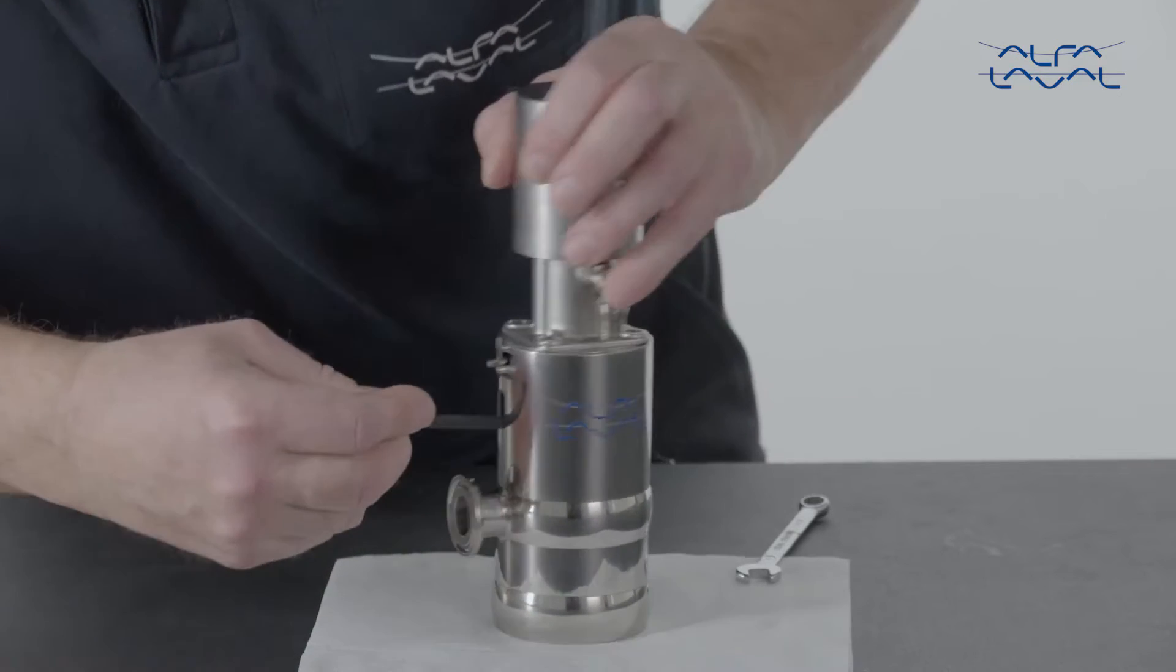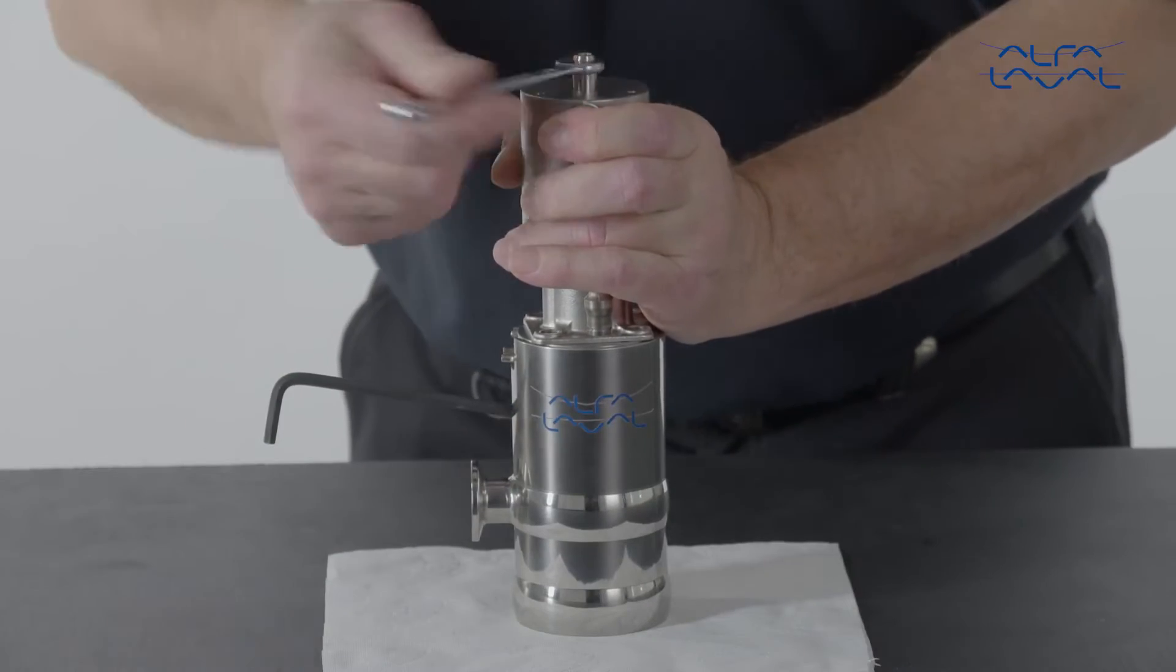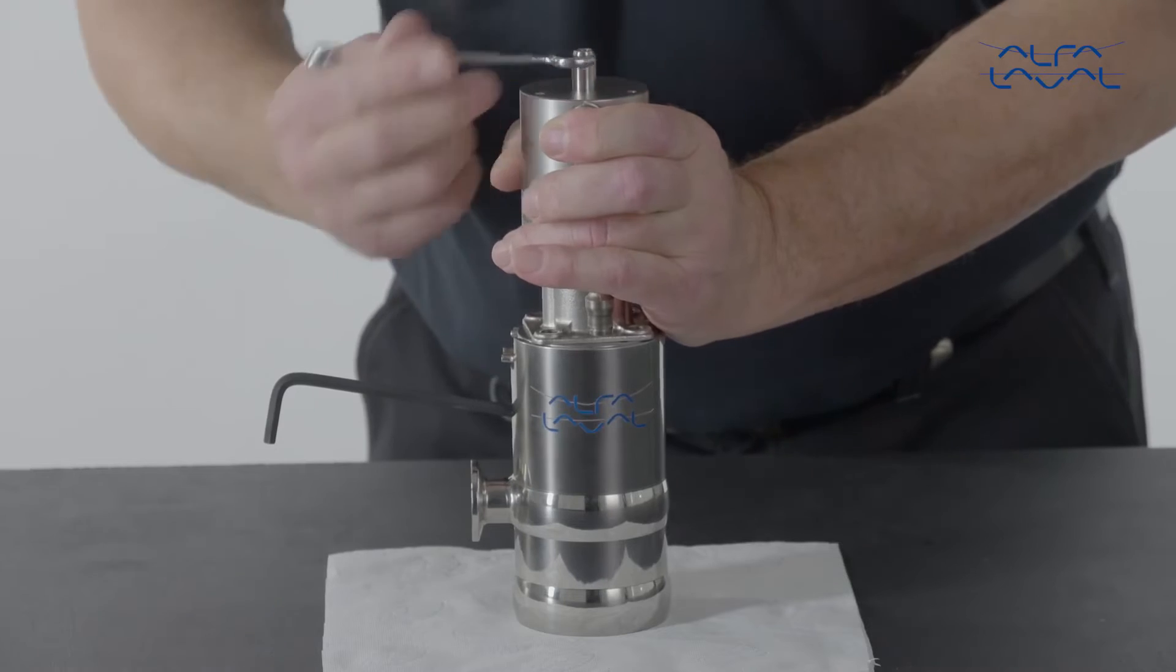Next, insert an Allen key into the hole to lock the piston into position. Then loosen the spindle to demount the actuator.